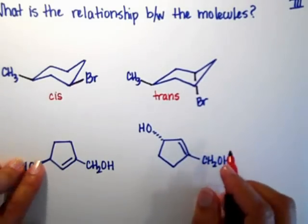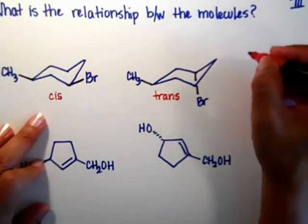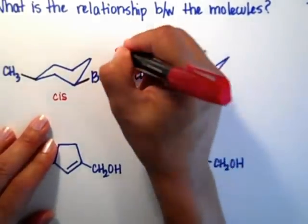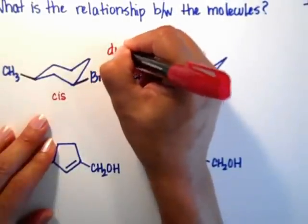That's it. I don't need to compare anything else. Cis and trans are diastereomers.